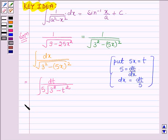Taking 1 upon 5 outside the integral, we have 1 upon 5 integral dt upon root over 3 square minus t square. Now, let us apply the formula. Here, in place of x we have t and in place of a we have 3.